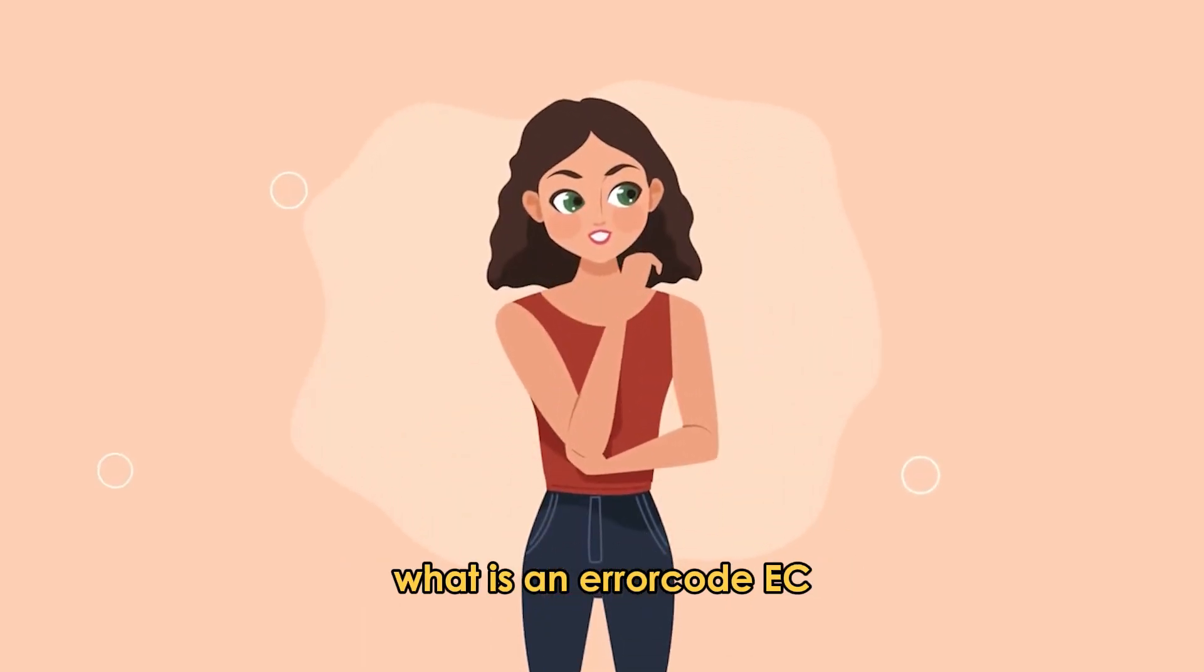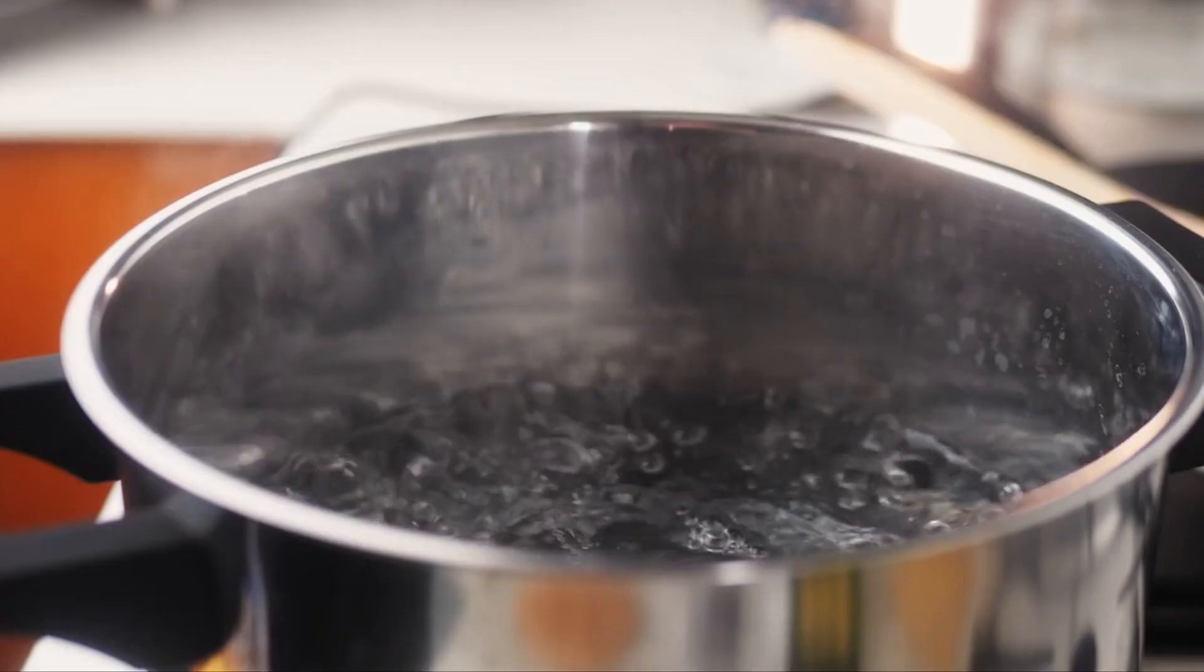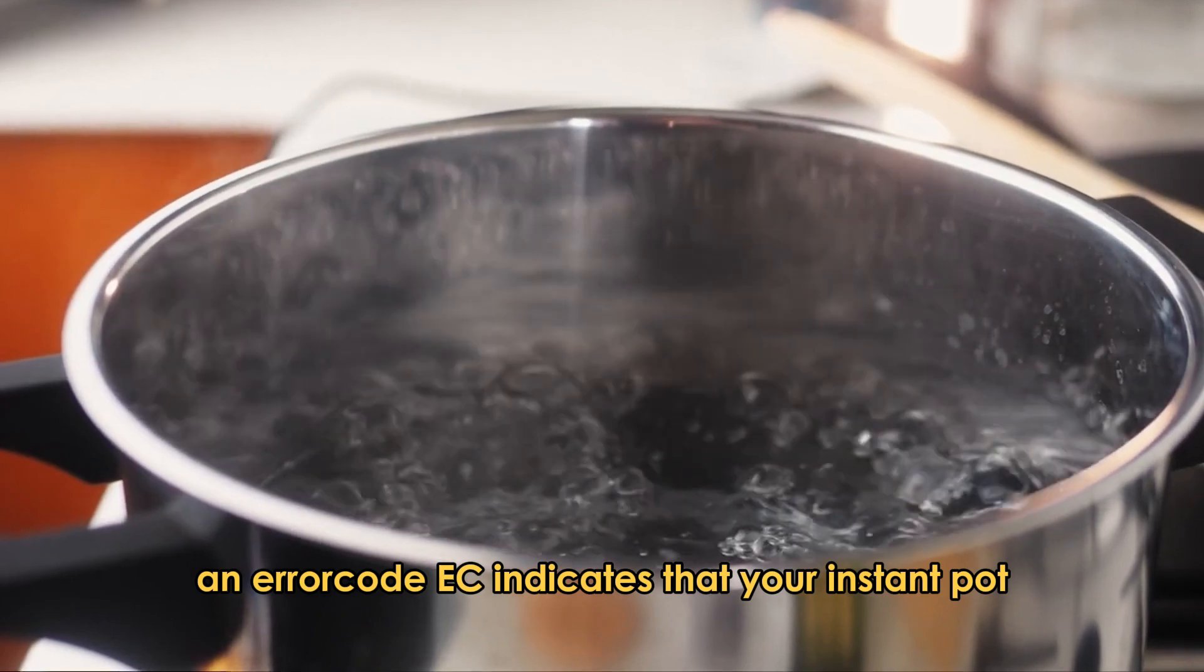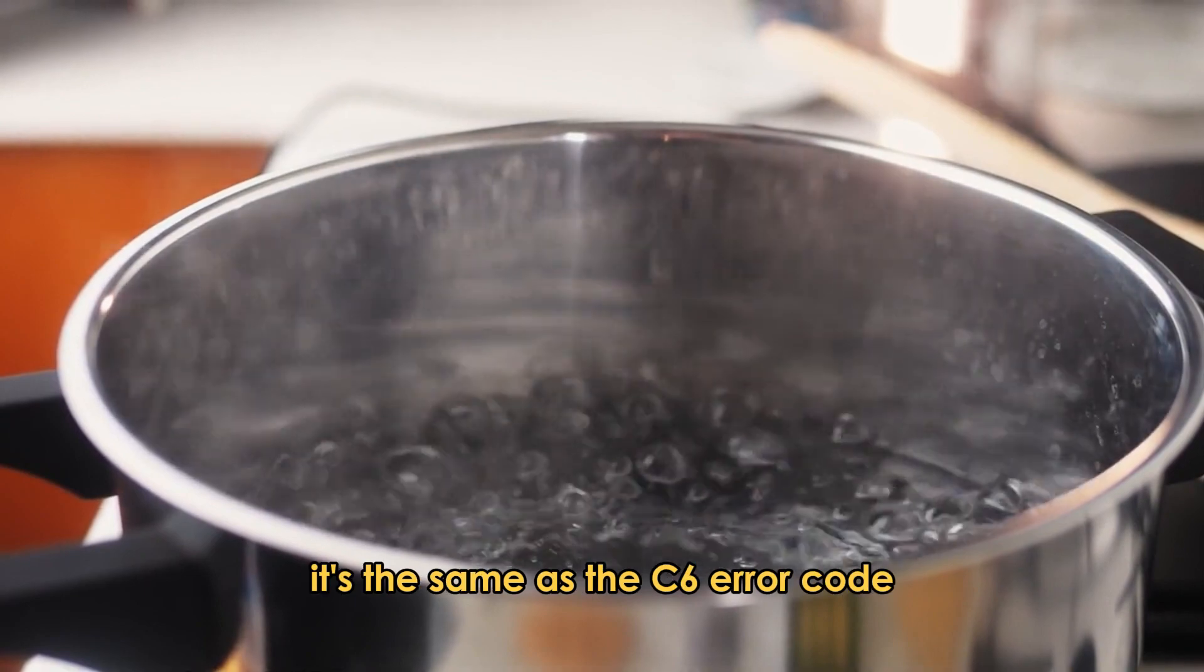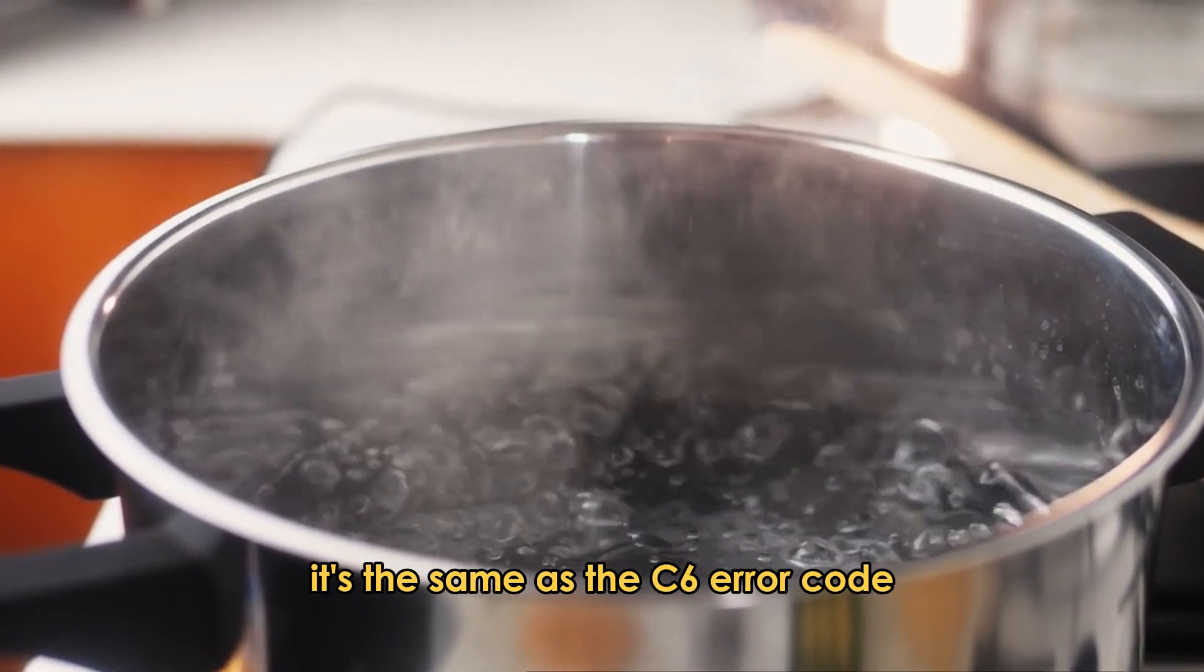But first, what is an error code EC? An error code EC indicates that your Instant Pot's pressure sensors are faulty. It's the same as the C6 error code.